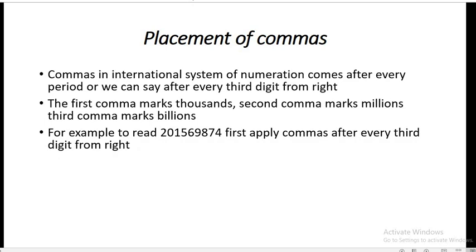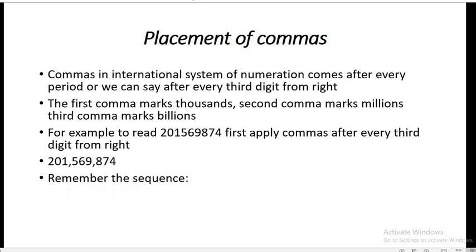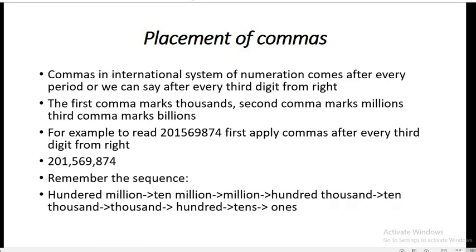For example, to read 201569874 according to the international system of numeration, first apply commas after every third digit from the right. Moving from right to left: first, second, third digit — the comma should be placed between 9 and 8. Then counting again: first, second, third — the comma should be placed between 1 and 5. So placing these commas, we now read this number easily. Remember the sequence: hundred millions, ten millions, millions, hundred thousands, ten thousands, thousands, hundreds, tens, and ones.